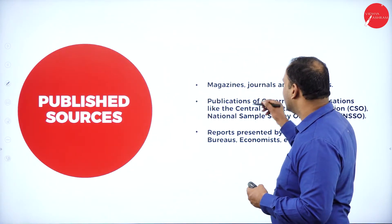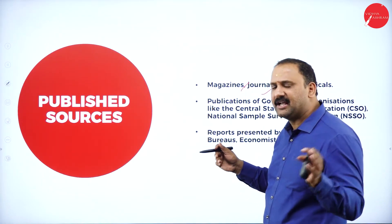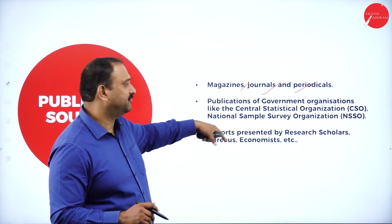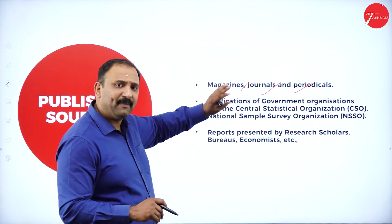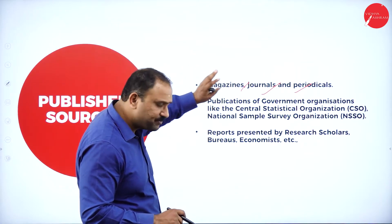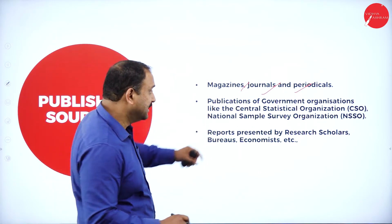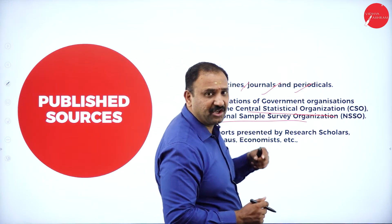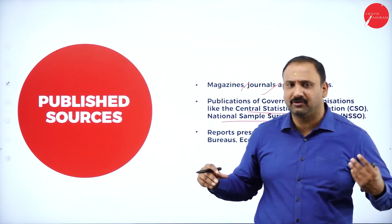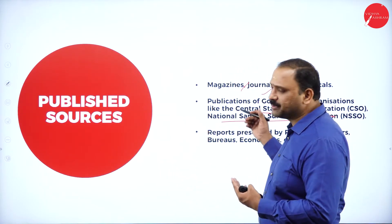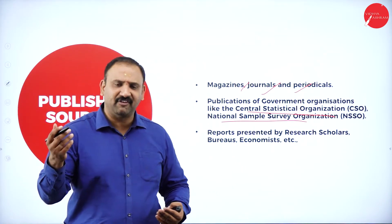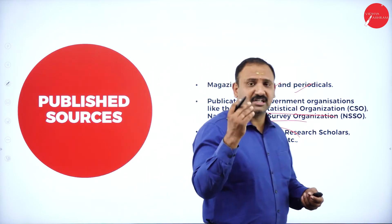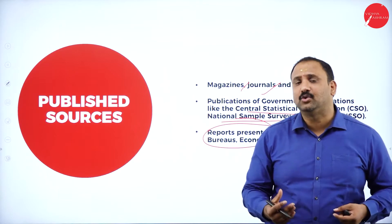Magazines, journals, and periodicals are also very important secondary data sources. There are many kinds of magazines available in India that help people understand how things are going and what the different factors are. Organizations like the Central Statistical Organization and the National Sample Survey Organization have huge repositories of data covering Indian states, union territories, demographic factors, and many related issues. Reports published by research scholars, economists, and bureaus are also very rich resources of data.